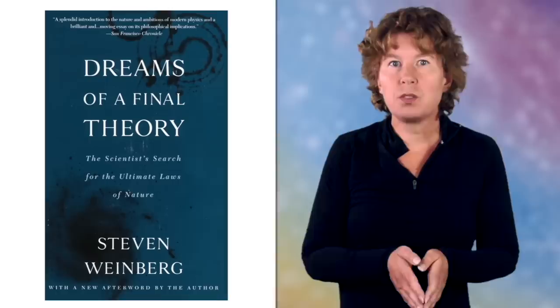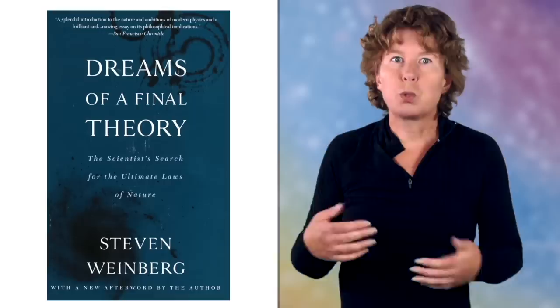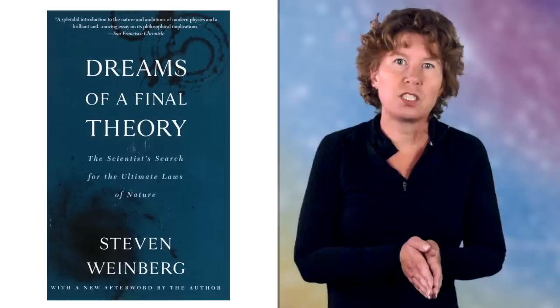But shortly after he wrote the book, string theorists discovered that string theory wouldn't be a unique theory of everything, but rather have a huge landscape of possible theories, each with a different set of values of the constants of nature. This is one of the multiverses in physics which I talked about in some earlier videos. But the idea that a theory of everything would be in some sense inevitable was always to remain a dream, because a scientific theory can't explain itself.